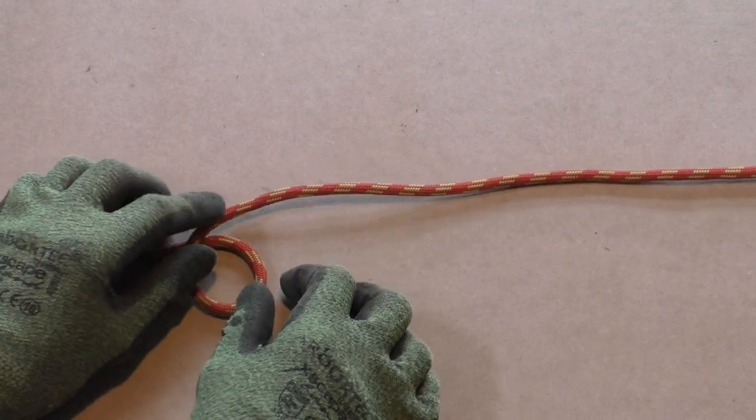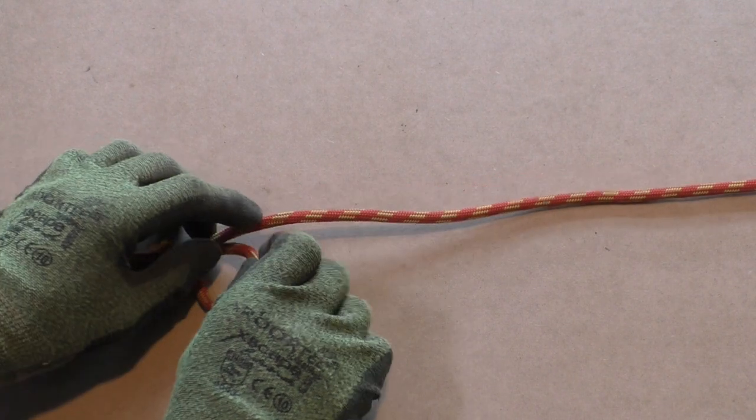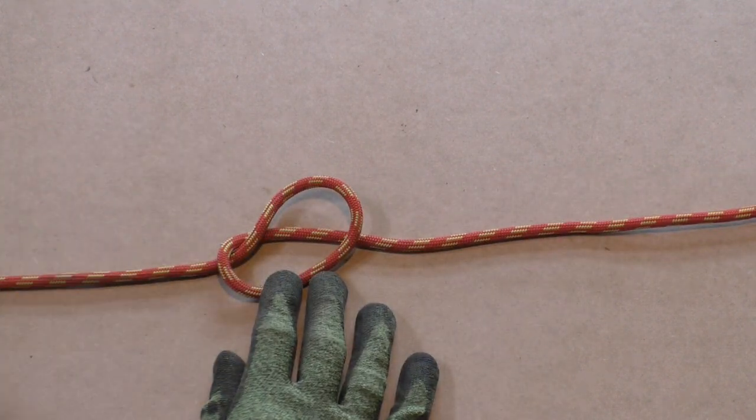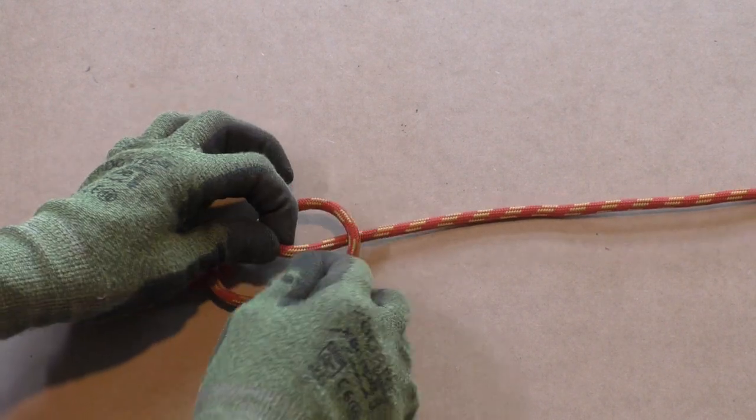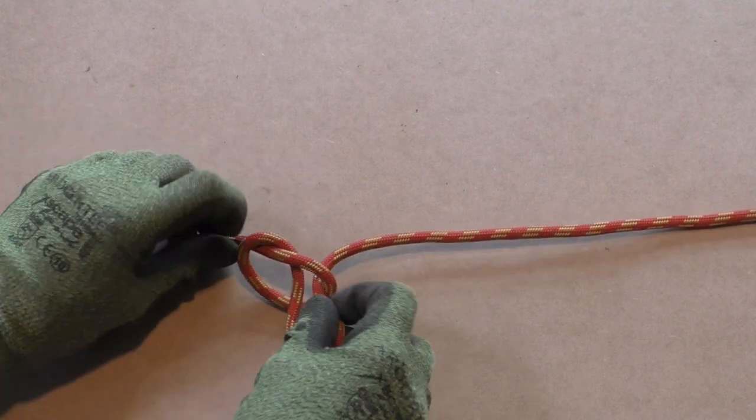First we form a loop in the rope. Next, we take the loop and lay it over the standing part of the line. Now we take the standing part and pull it through the loop. This creates the first bight of the chain sinnet.